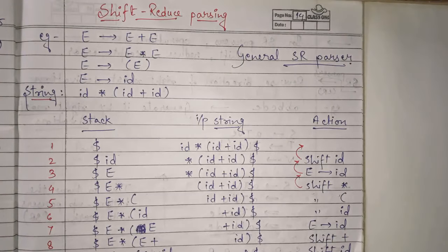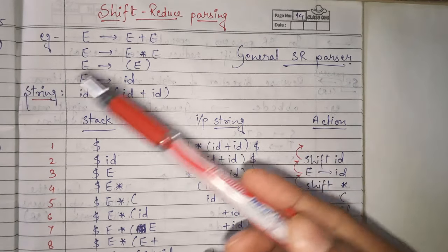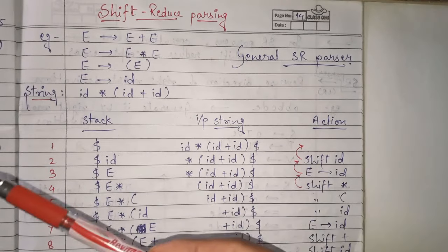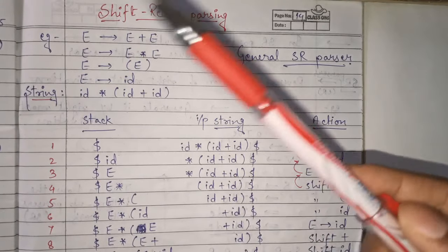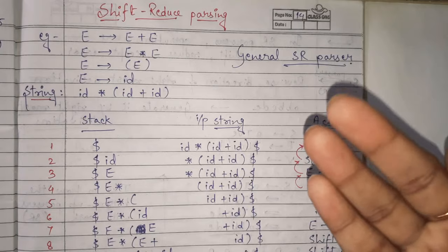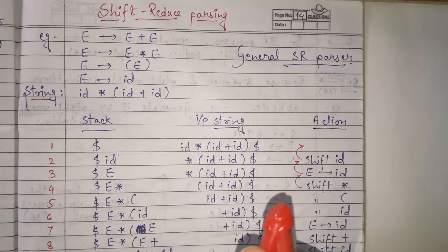Hello guys, I am Paneentha and welcome back to my channel to polish your CAC concepts with me. In today's video, we are going to see one more topic of compiler design — that is shift-reduce parsing. This shift-reduce parsing is also known as bottom-up parsing, and it is one of the types of bottom-up parsing.